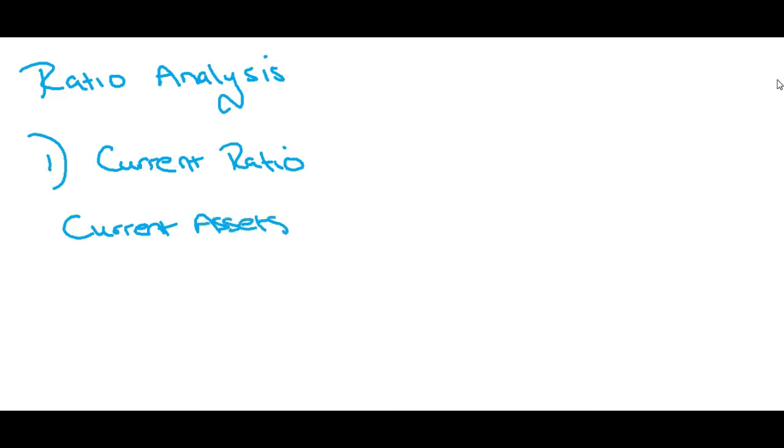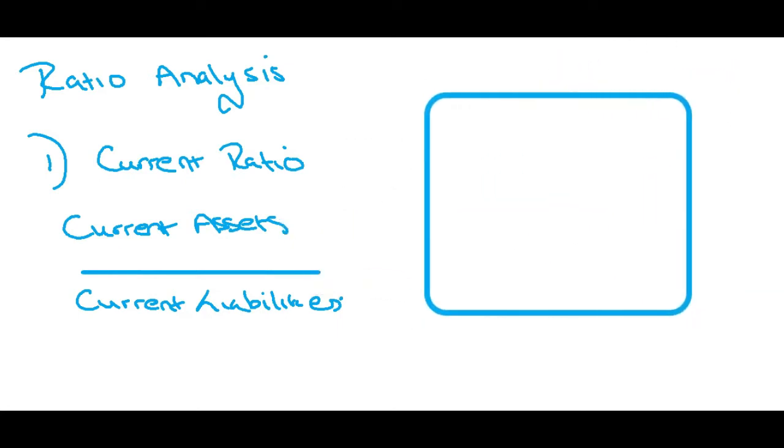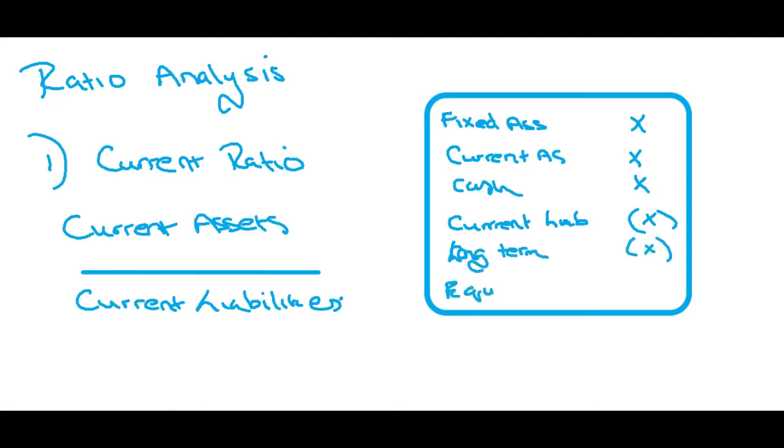Current ratio. This is quite literally current assets divided by current liabilities. Now, if you look at your statement of financial position, you'll have all of your fixed assets up here and then you'll have current assets over here. Then you'll have your cash and then you'll get current liabilities here. Then you'll have your long term liabilities here and then your equity down here.